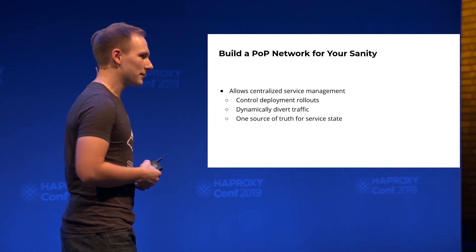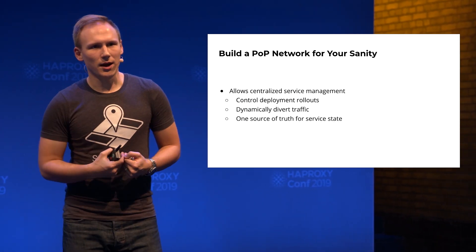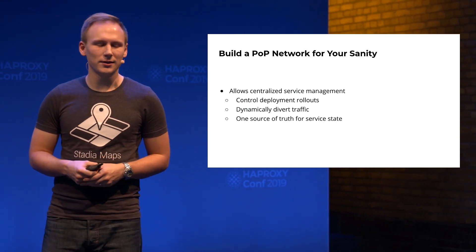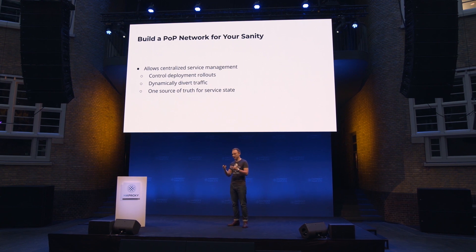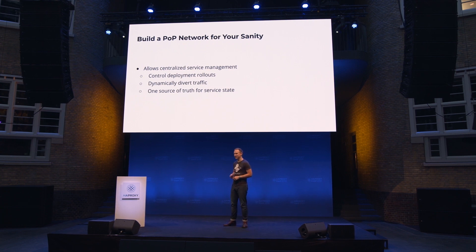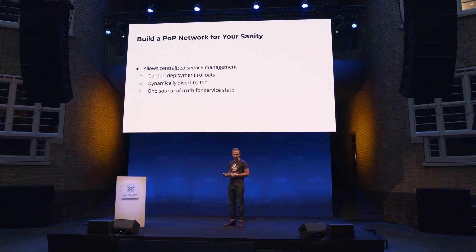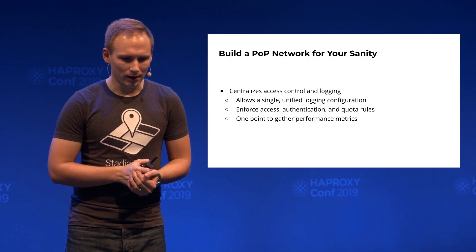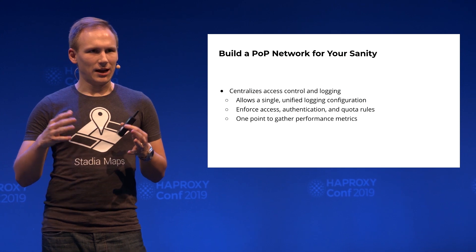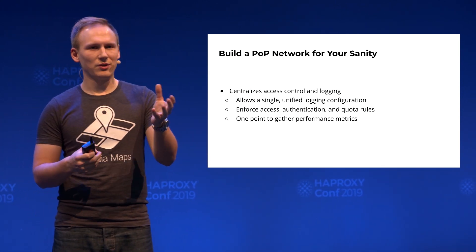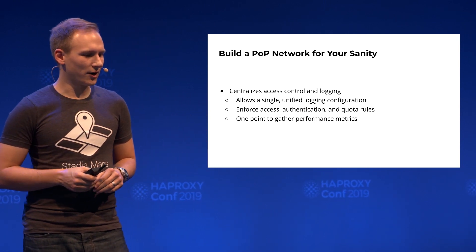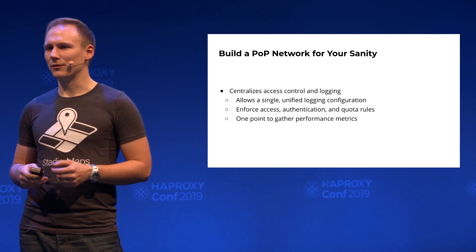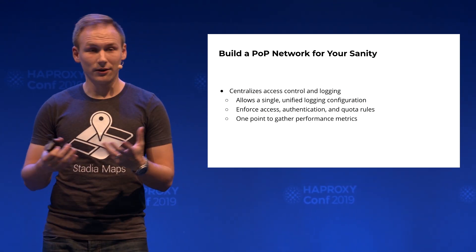You also have one source of truth for your service state. When you only have direct backend connections, it can be difficult to answer whether a server is up, but with HAProxy it's much easier — just look at the stats page to see what servers are actually up on the backend. It gives you a centralized place to do access control and logging. All client requests flow through one place, so you can push logs to Elasticsearch or Grafana with one configuration. It also gives you one centralized place to enforce authentication, access control, and in our case, quota enforcement.